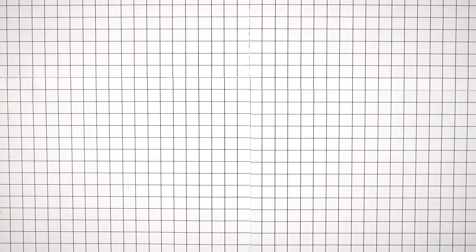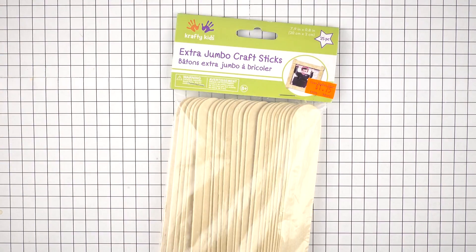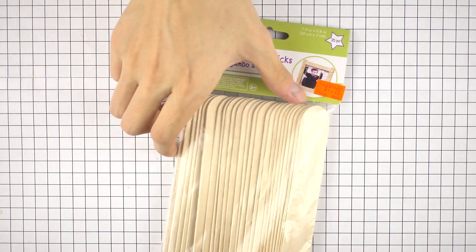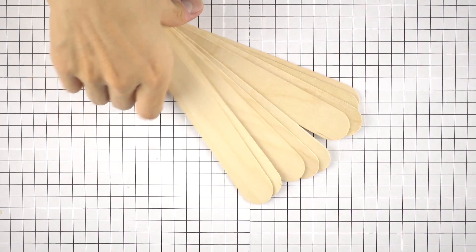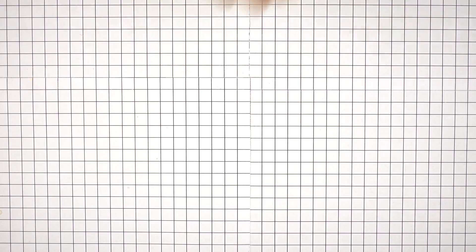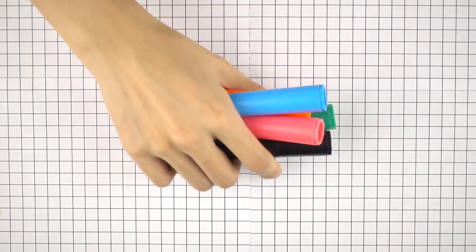So first we need a bunch of popsicle sticks. I have chosen the larger type that is used for arts and crafts because this will make it easier for us to assemble the actual chain. It's also good to have a ruler and a few highlighters or markers.